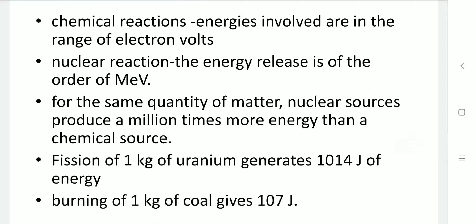Fission of 1 kilogram of uranium will generate 10¹⁴ joules of energy, whereas burning 1 kilogram of coal gives only 10⁷ joules of energy. So the same amount of matter generates vastly different amounts of energy — the fission process generates a very much larger amount of energy.